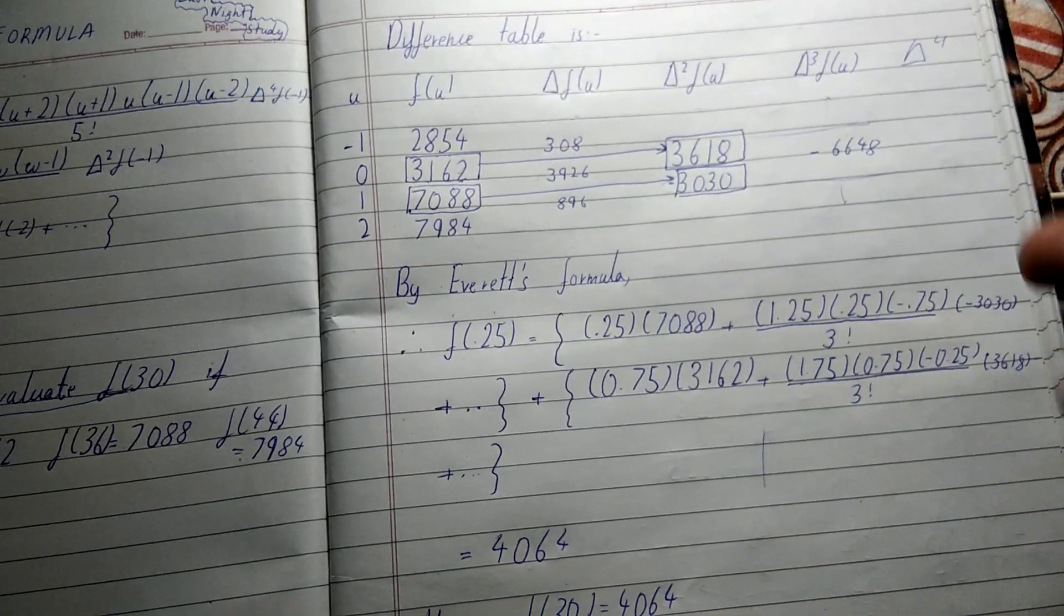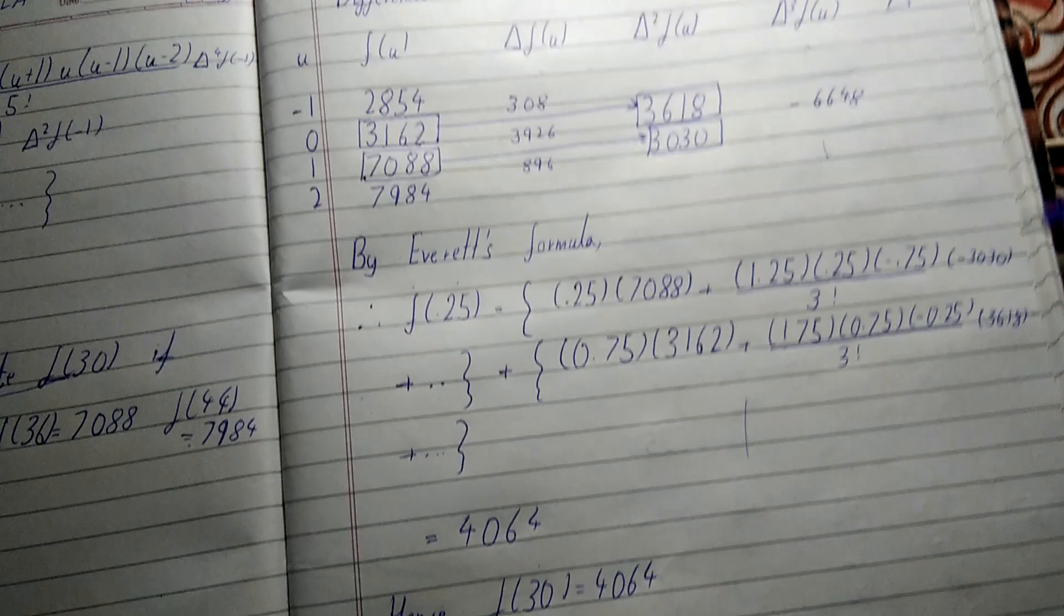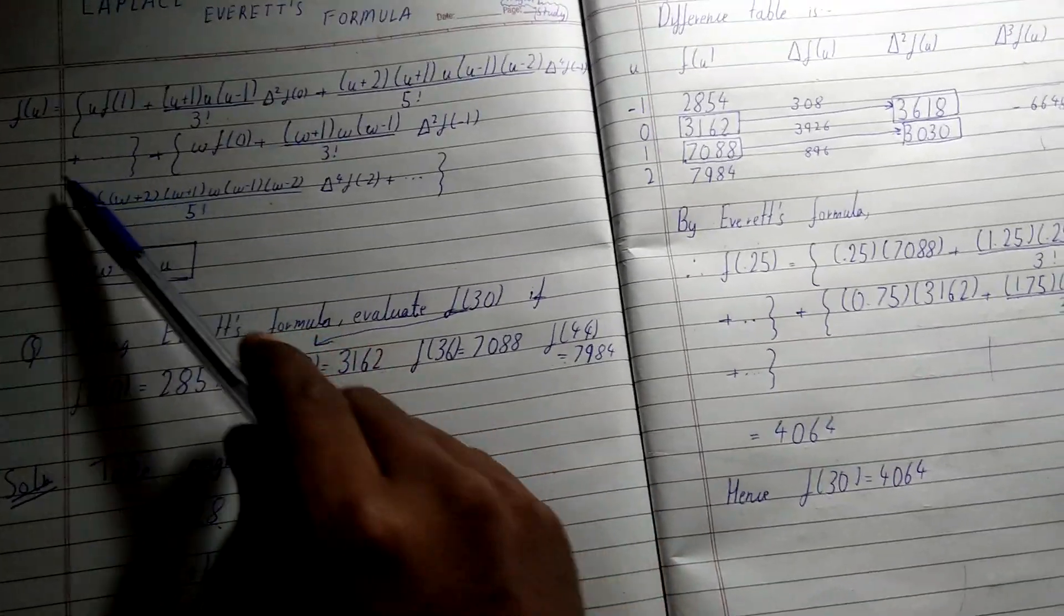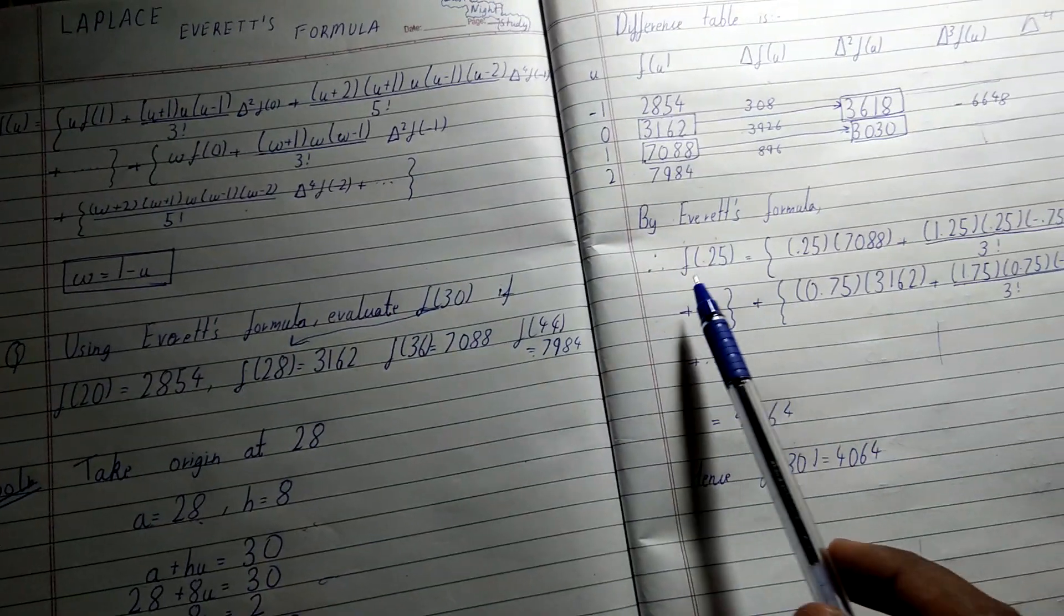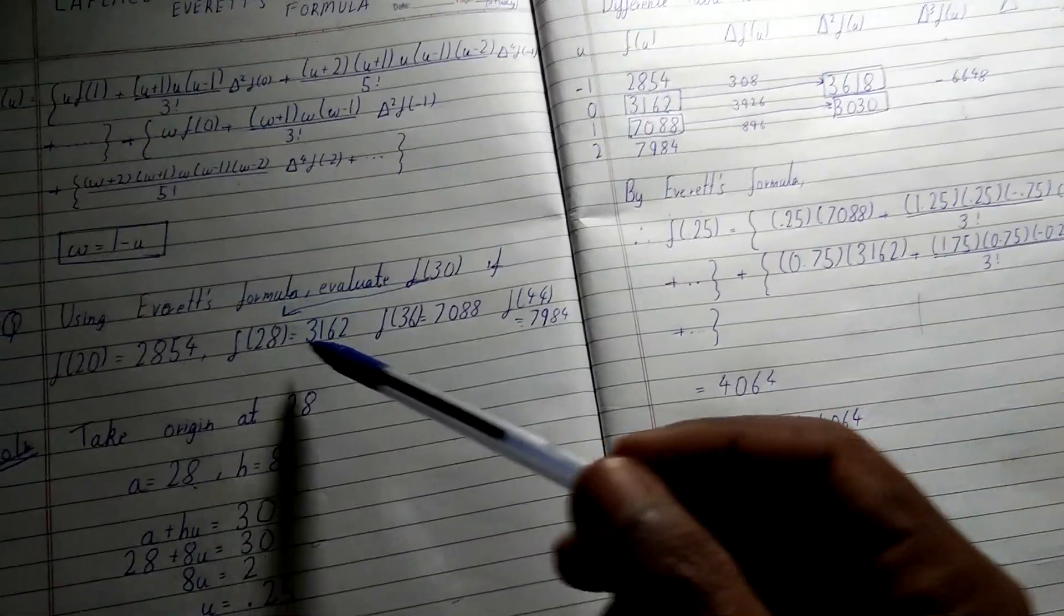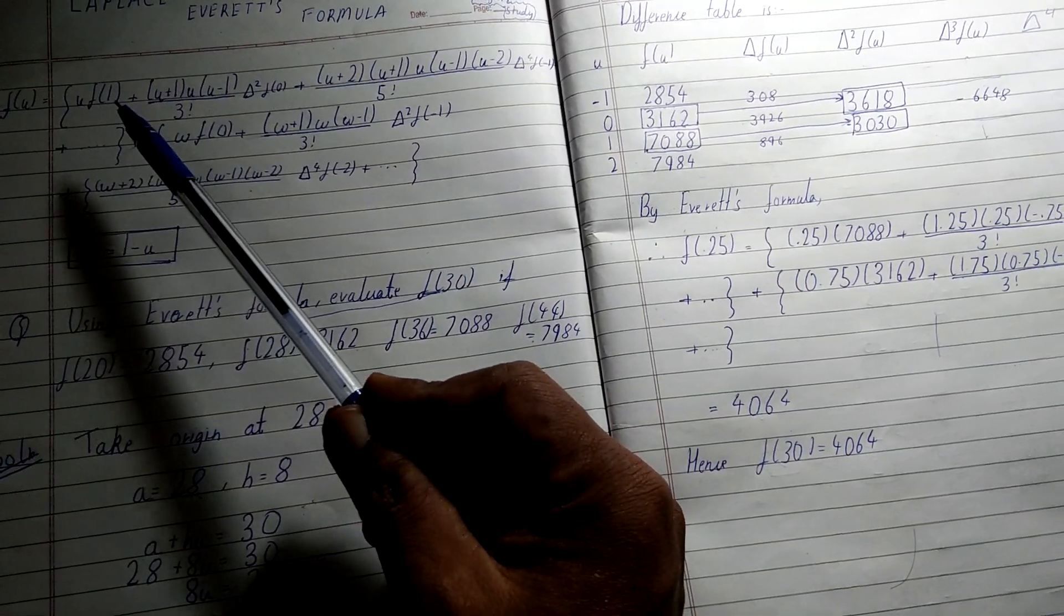So f(u)... here's f(u). u is 0.25, which we found over here. Then u·f(1), that will be u = 0.25 and f(1) = 7088.